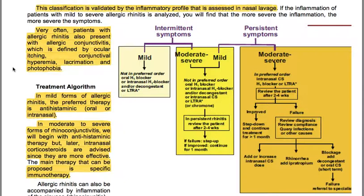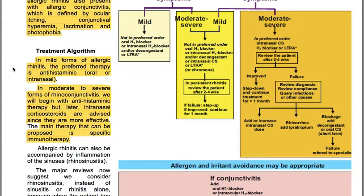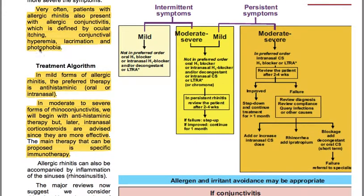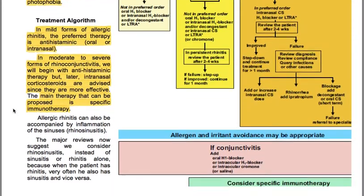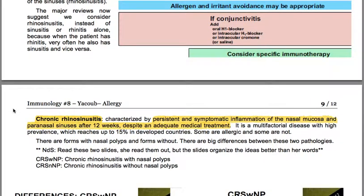In mild forms of allergic rhinitis, the preferred therapy is antihistaminic, oral or intranasal. In moderate-to-severe rhinoconjunctivitis, antihistaminic therapy is started, but intranasal corticosteroids are advised as they are more effective. Specific immunotherapy is the main therapy that can be proposed. Allergic rhinitis can also be accompanied by inflammation of the sinuses. Major reviews now suggest considering rhinoconjunctivitis rather than rhinitis or sinusitis alone, because when the patient has rhinitis, they often also have sinusitis.